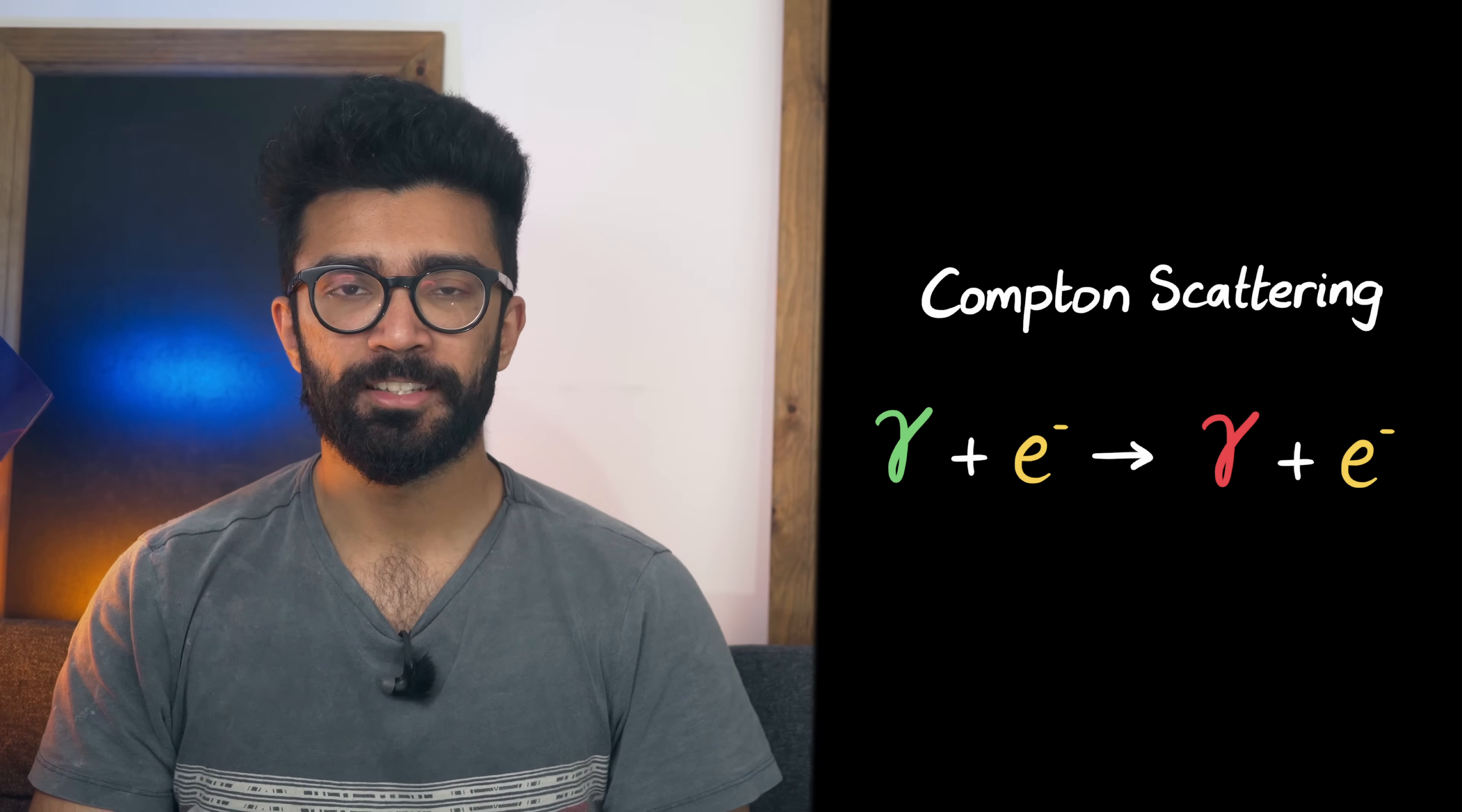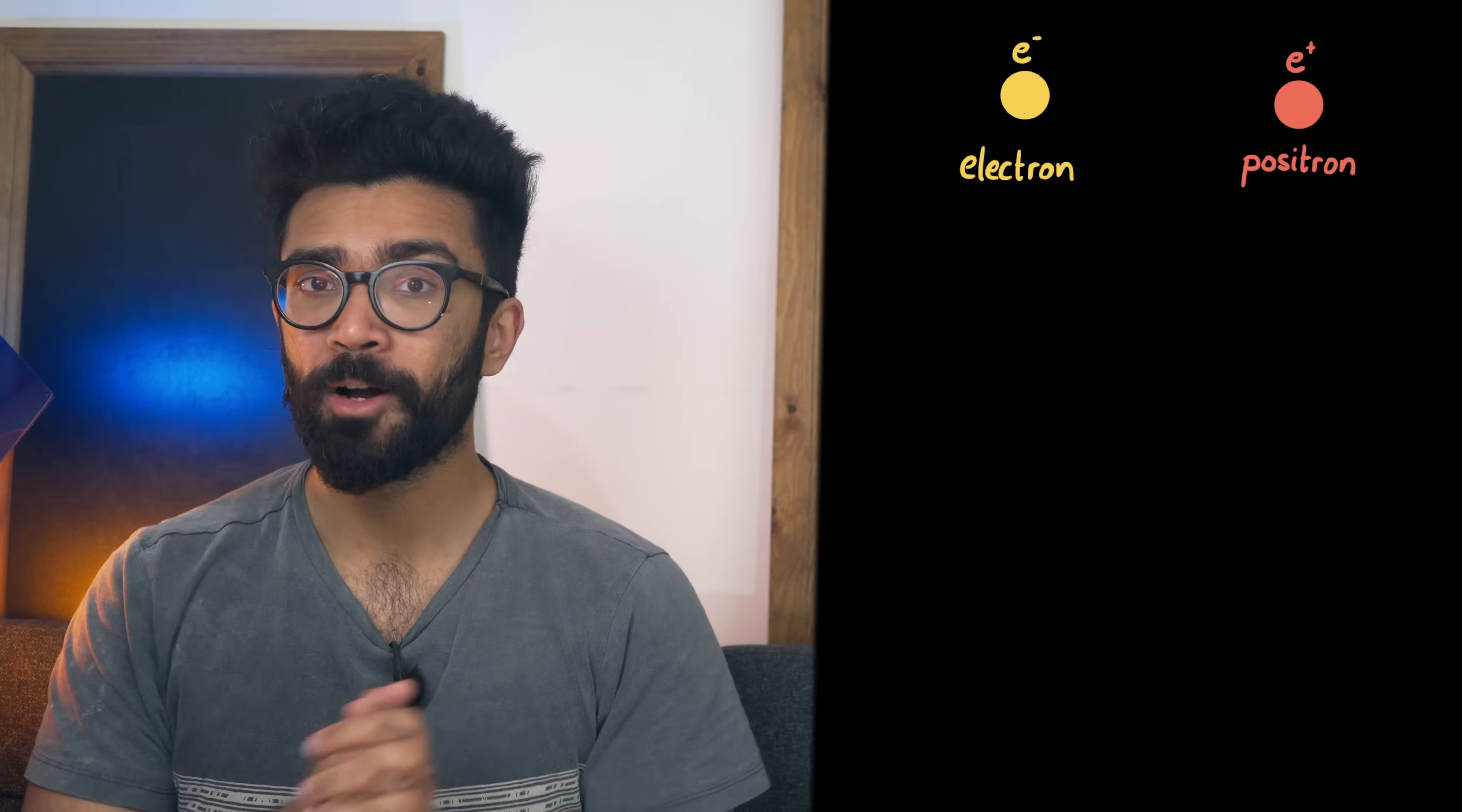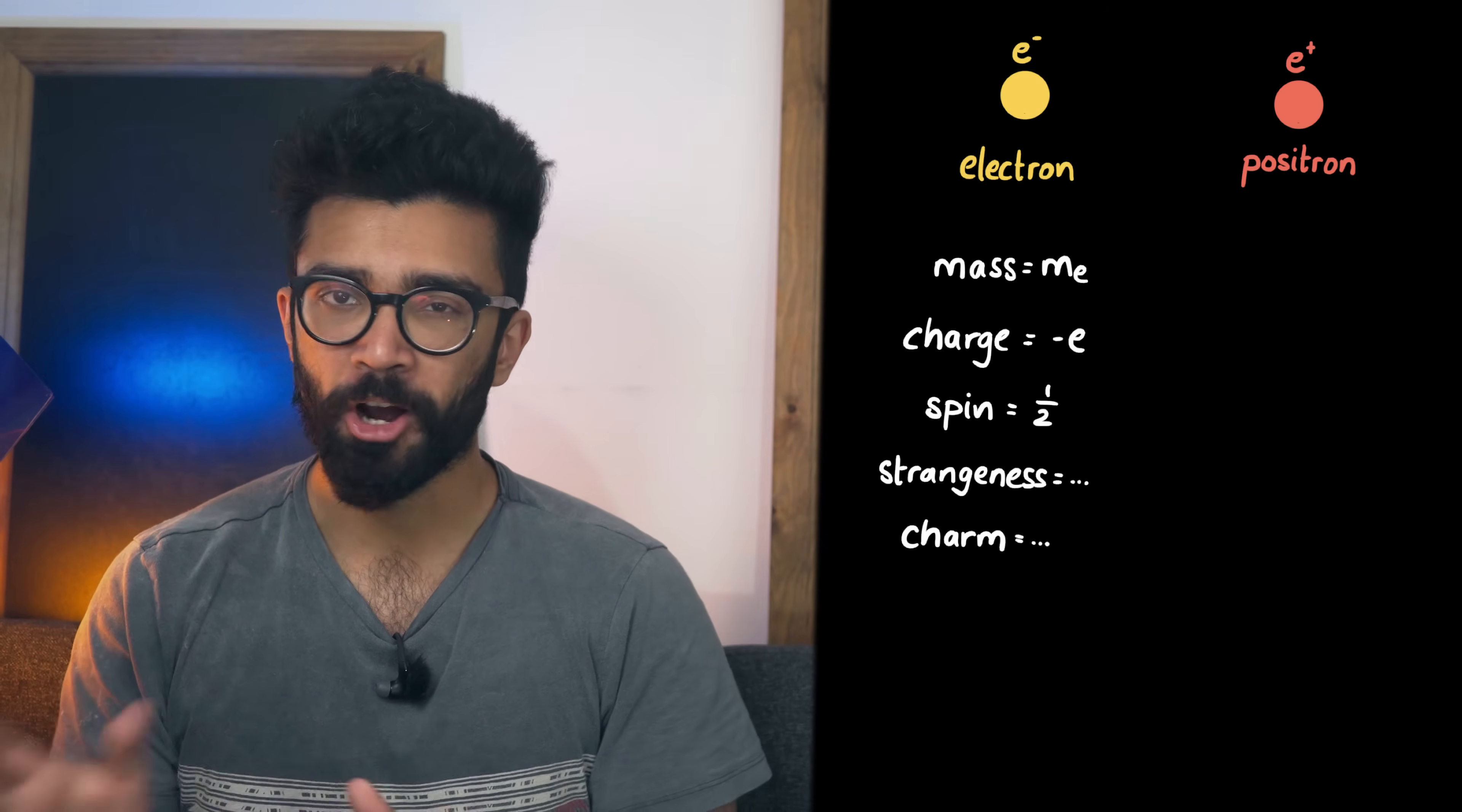This time we're going to have to consider an electron as well as its anti-particle the positron. In particle physics we can describe all particles with a large number of properties. Mass, charge, spin, strangeness, charm and so on.